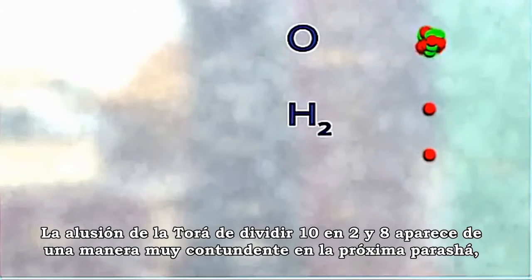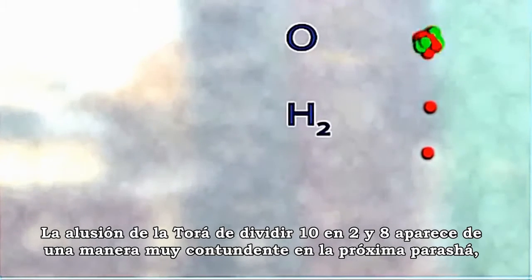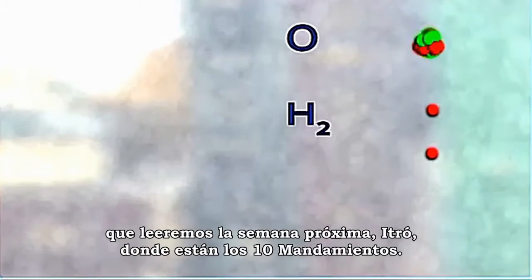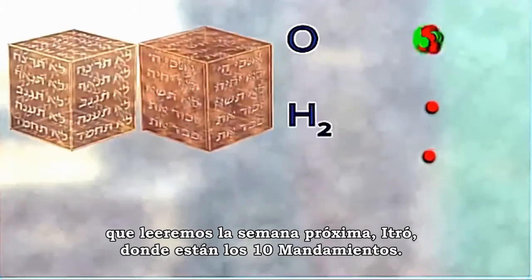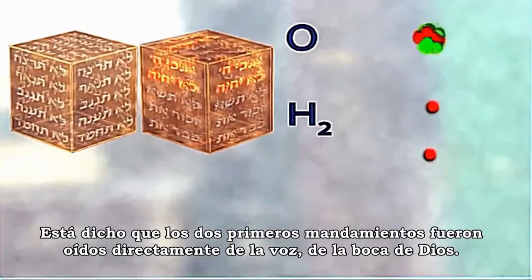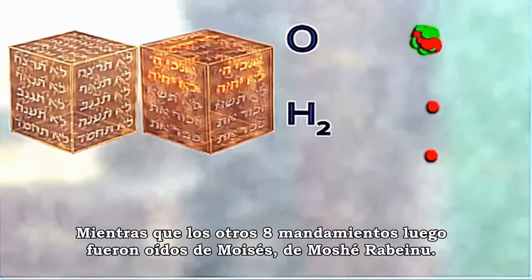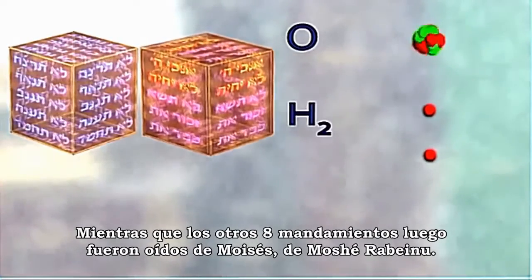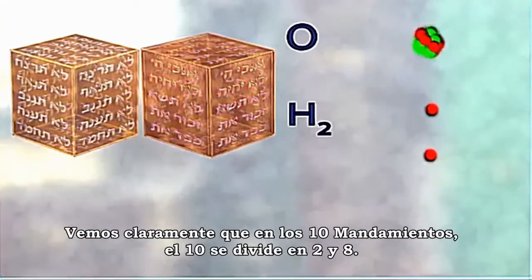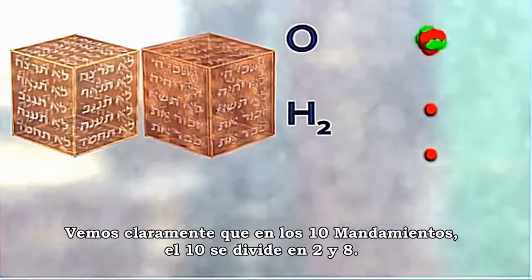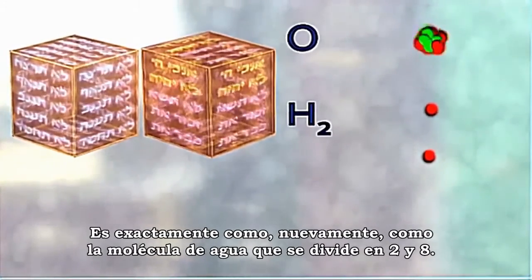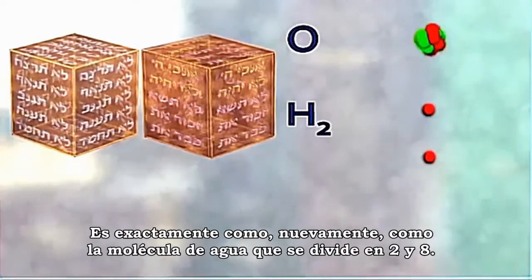The allusion in the Torah to splitting ten into two and eight appears very strongly in the following parashah that we'll read next week, Parashat Yitro, where there are ten commandments. The first two commandments we heard directly from the voice, from the mouth of God, and the remaining eight from Moshe Rabbeinu. We see very clearly that in the ten commandments, the ten divides into two and eight — just like a water molecule that divides into two and eight.